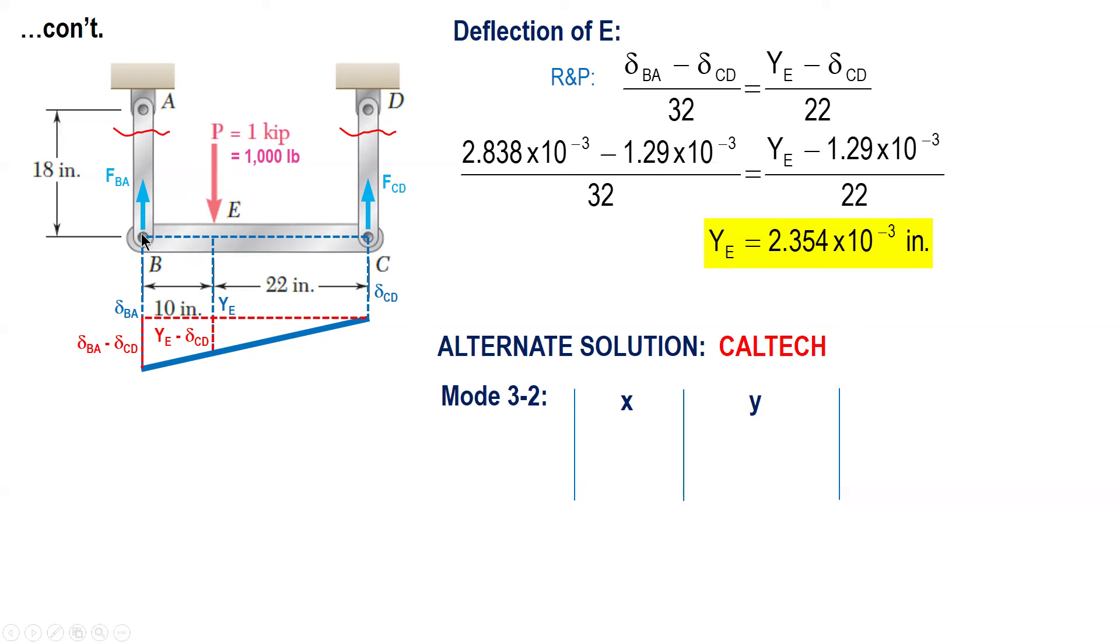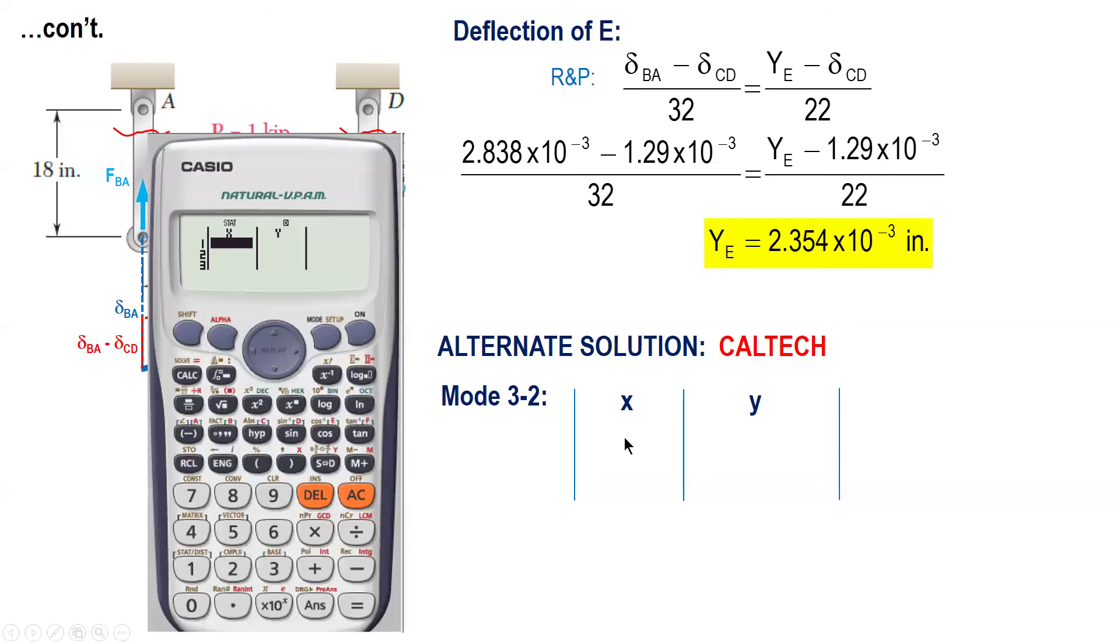Now if we consider B as the origin, then the X value at B is 0. And then the other X is 32. Then there's Y.